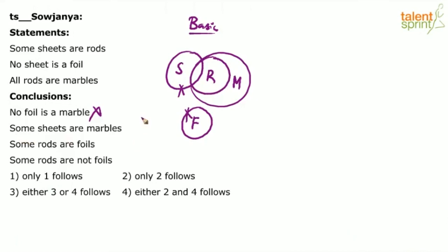Second one: Some sheets are marbles. Yes, you can see that some sheets are marbles. This conclusion has satisfied the basic diagram. So can we directly say true? No. A conclusion is true if and only if it satisfies all the diagrams. It satisfies the basic diagram, so we will have to look for the other possible diagrams.